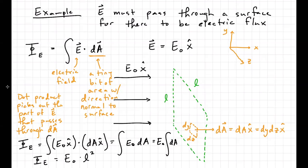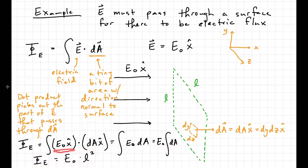So the flux is equal to E₀ times L squared. The units are a bit unusual, but the interpretation is clear: this tells us how much electric field is passing through the surface we chose. Usually we figure out what the electric field is, figure out the area vector orientation for every little dA, do the dot product, integrate, and end up with an answer. By the time you resolve the dot product, you're really just doing a normal integral — the surface part is the interpretive step.